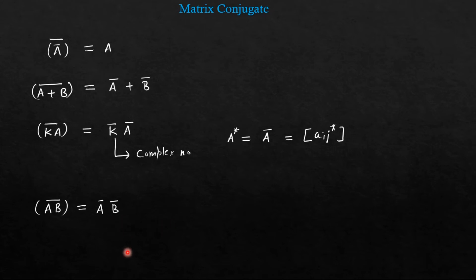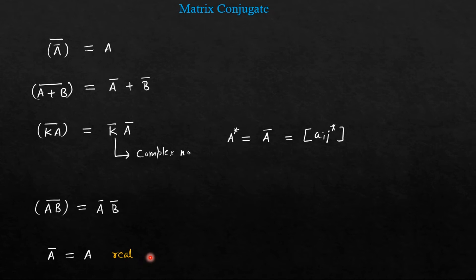Next, the conjugate of the matrix A will be equal to the original matrix in case of a real matrix. Because in a real matrix, all the elements will be real. So after conjugate, there will be no sign change — all the elements will remain the same. Hence, the conjugate matrix will be the same as the original matrix.